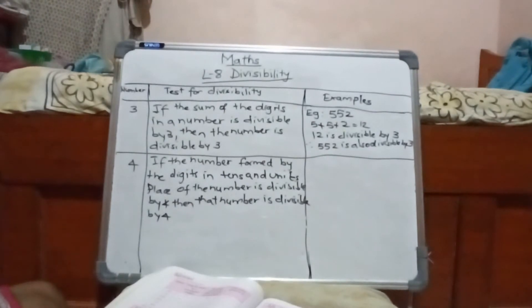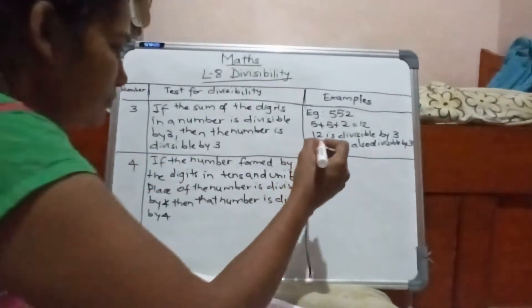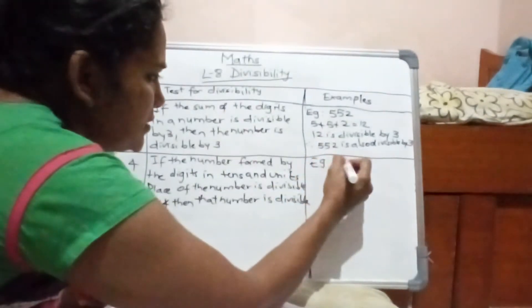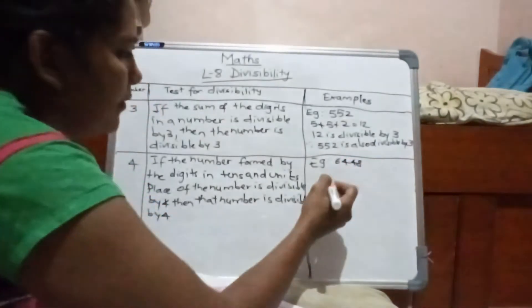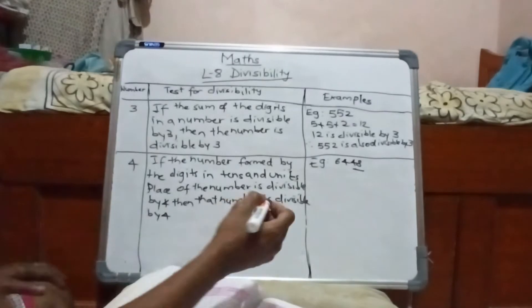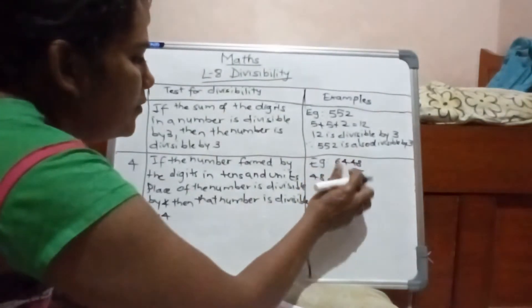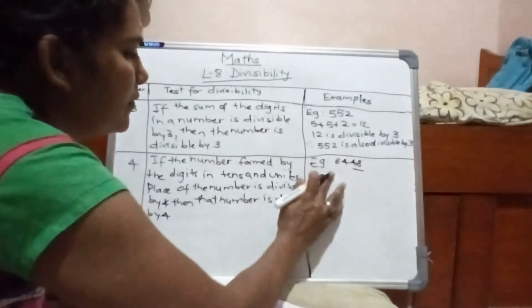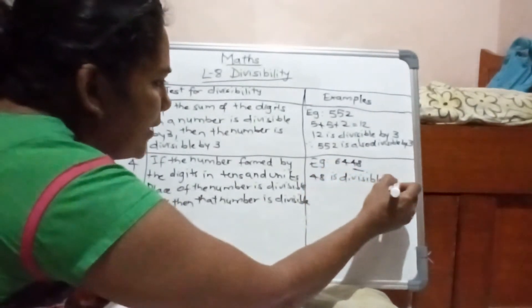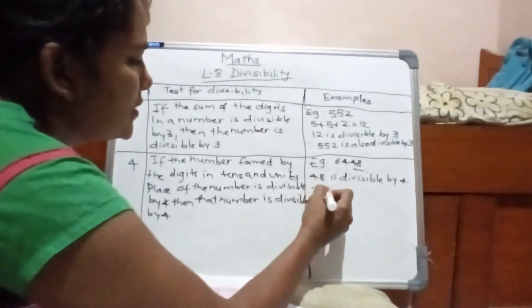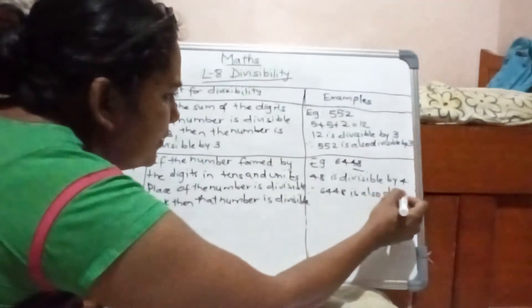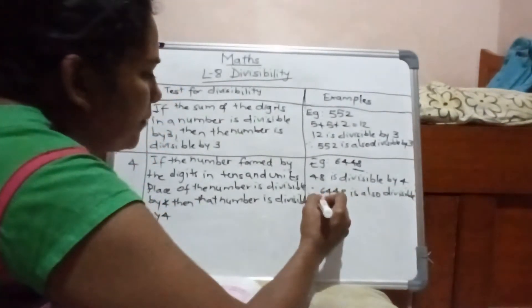Example: take 648. Look at the last two digits — 48. 48 is divisible by 4, therefore 648 is also divisible by 4.